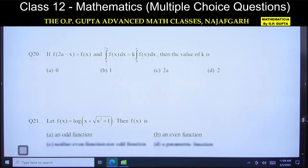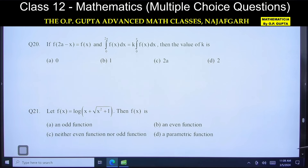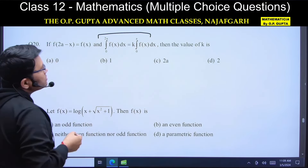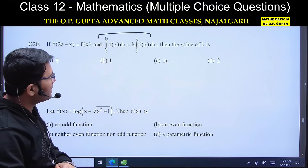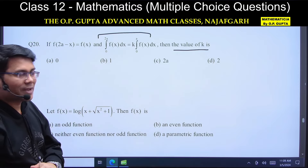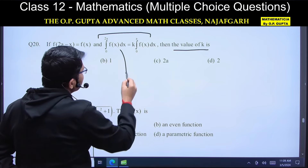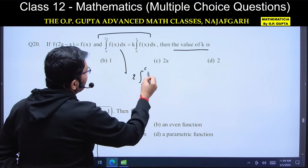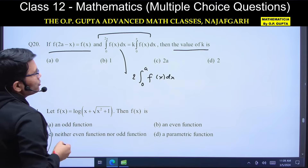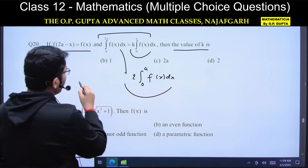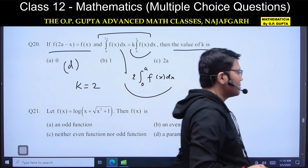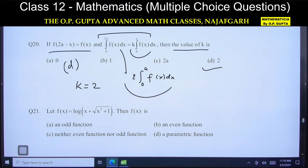Question number 20: condition है f(2a−x) = f(x)। Integral ∫₀^(2a) f(x)dx = k·∫₀ᵃ f(x)dx। Property के अनुसार जब f(2a−x) = f(x) हो तो ∫₀^(2a) f(x)dx = 2∫₀ᵃ f(x)dx। तो k = 2। Option D सही है।